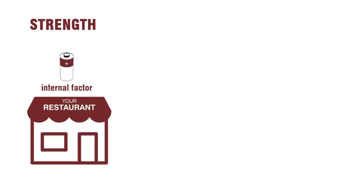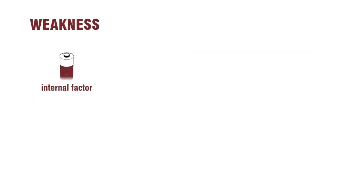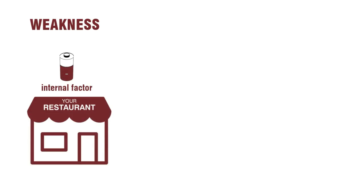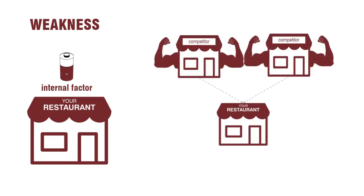A strength is a positive internal factor that your restaurant has and that creates an advantage for you in the market. A weakness, on the other hand, is a negative internal factor that your restaurant has and that creates a disadvantage for you in the market.